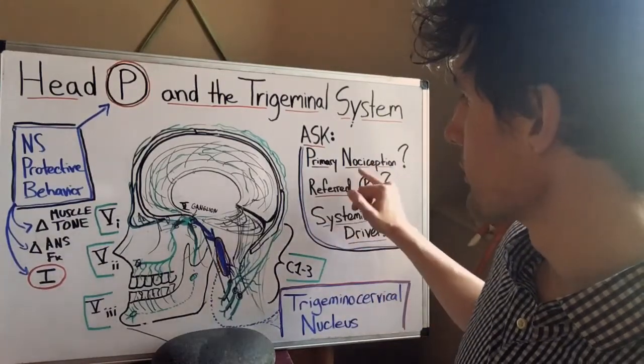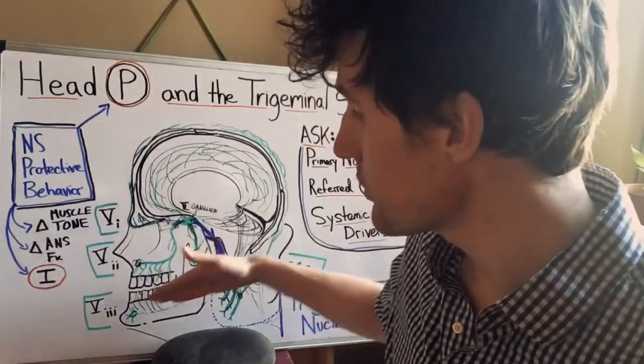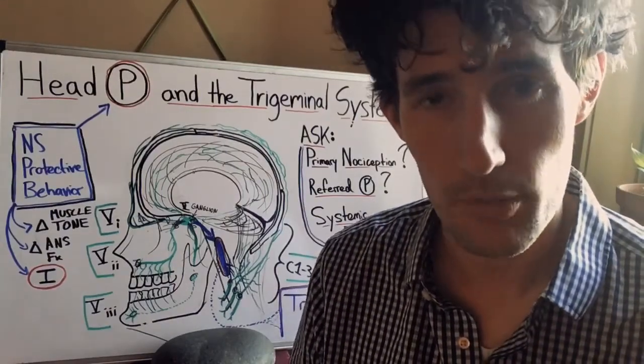So what do I mean by primary nociception? I mean that one of these nerves and the tissue that it's innervating is irritated and that is the simple reason for the pain.